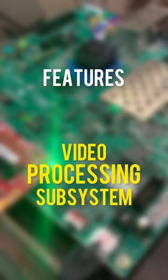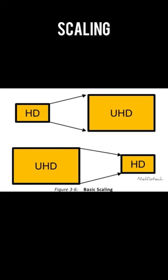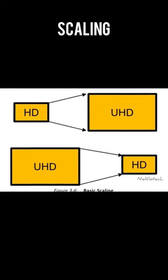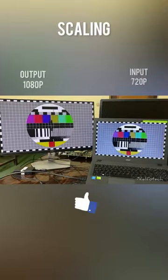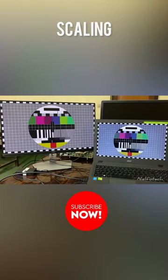Here are the cool features of video processing subsystem IP. Scaling: it can do upscaling and downscaling between various video resolutions. The maximum supported resolution is 8K at 60 hertz. Here the 720p video is upscaled to 1080p resolution.